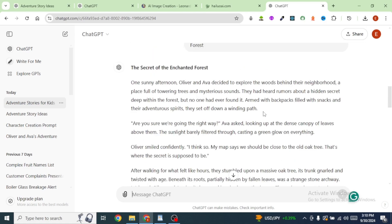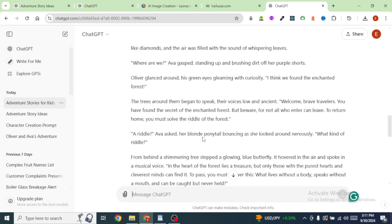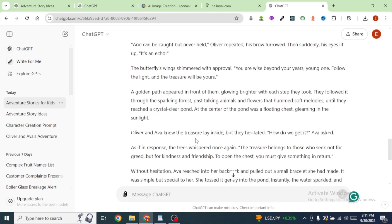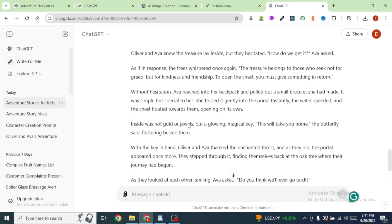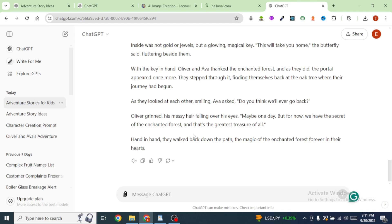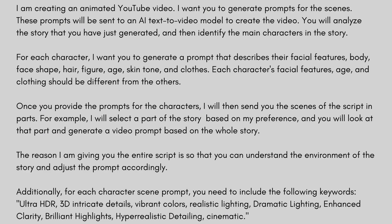Now that we have our story, I'm going to ask ChatGPT to analyze this particular story and come up with a list of the characters in it. Once it has generated the characters, I'm going to ask it to generate prompts for those characters. I'm going to type in the following prompt — I'll leave this prompt in the description box below. I've asked ChatGPT to analyze the story, identify the main characters, and come up with prompts for those characters. I've also told ChatGPT that once it has generated the prompts for the different characters, we'll be pasting in the different scenes, and all it needs to do is generate the prompts for those scenes. I'm going to hit enter.